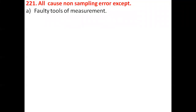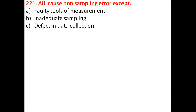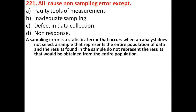The first question is: all causes of non-sampling error except — options given: faulty tools of measurement, inadequate sampling, defective data collection, and non-response. To answer correctly, we need to understand sampling error and non-sampling error. Sampling error is a statistical error that occurs when an analyst does not select a sample that represents the entire population.